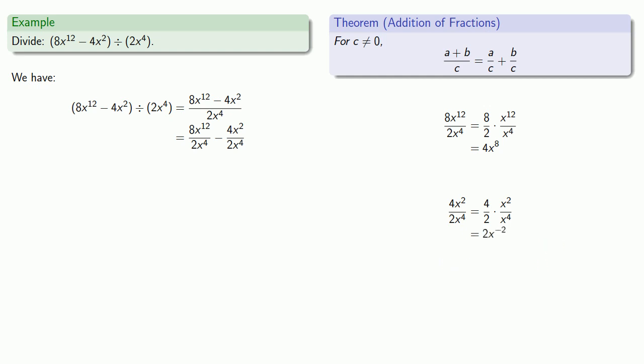We'd prefer not to have negative exponents, so we'll take it one more step. So instead of 8x^12 over 2x^4, we could write 4x^8. And instead of 4x^2 over 2x^4, we can write 2 over x^2.